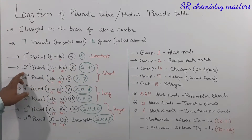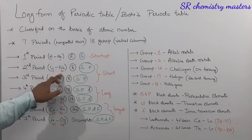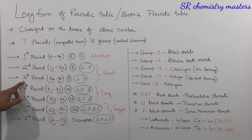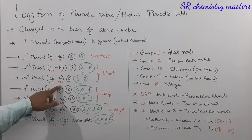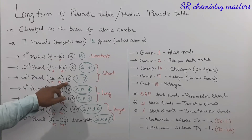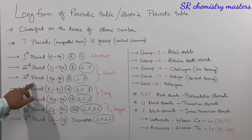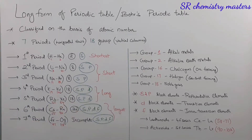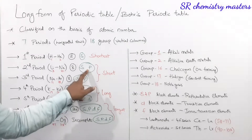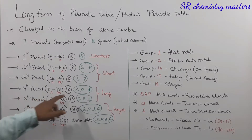The second period consists of the elements from lithium to neon, and this period consists of eight elements. The third period consists of elements from sodium to argon, and here also we have eight elements. The second period and third period are considered as the short periods of the periodic table, where we have elements from the s and p blocks.